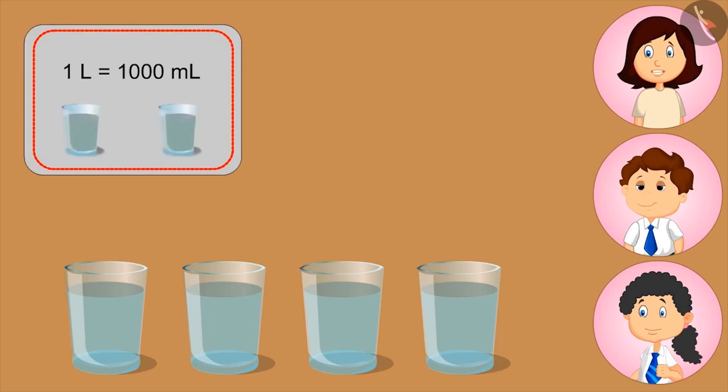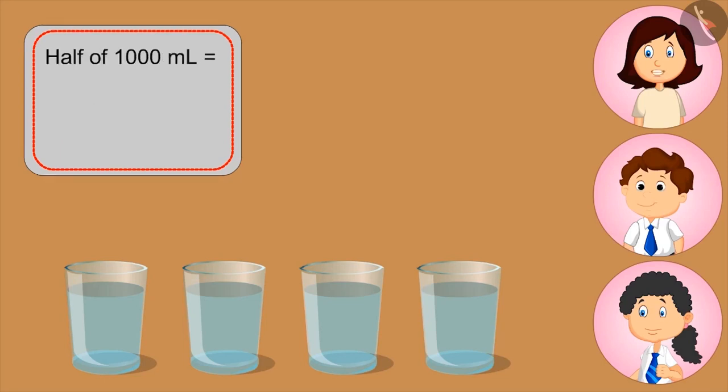Now if I fill these two glasses, then how much lemonade will be left in the jug? Half the jug is still full. What is the half of a liter? Kids, you can pause the video and think about the answer. 500 ml. This means two glasses contains 500 ml of lemonade. Yes, Mom. Can you tell how much lemonade is in one glass? Half of 500 ml. Very good. So what's that?